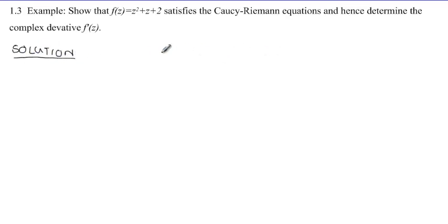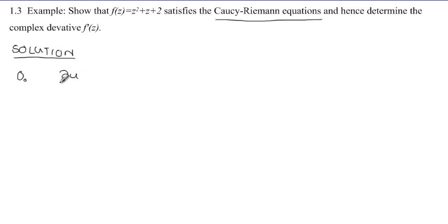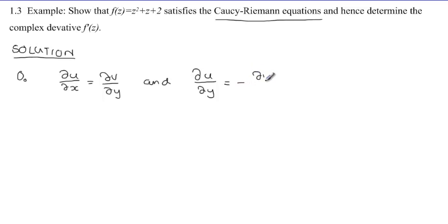To give a solution to this problem, we need to recall the Cauchy-Riemann equations — this is step zero. The Cauchy-Riemann equations state that if the given function is analytic, then it satisfies: ∂u/∂x = ∂v/∂y, and ∂u/∂y = −∂v/∂x.